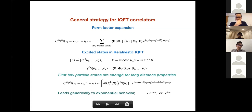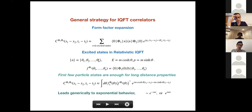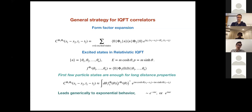In a relativistic integrable field theory you know what these eigenstates look like: they are particle states on top of the vacuum. You can have any number n of particles, each parameterized by their rapidity, which is a way to parameterize energy and momentum relativistically. I'm focusing on a particularly simple example with just one kind of particle with one mass.